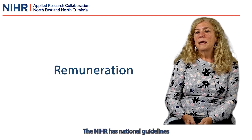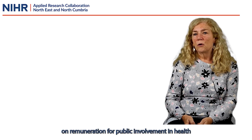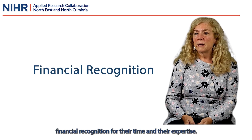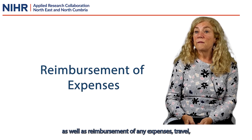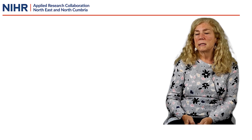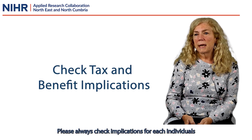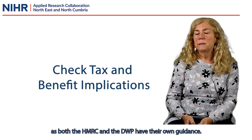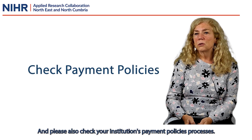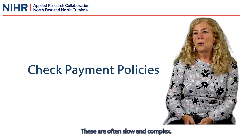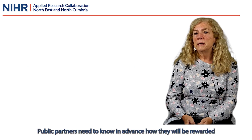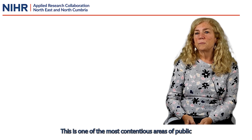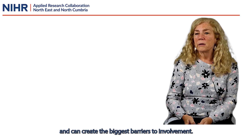Remuneration. The NIHR has national guidelines on remuneration for public involvement in health and social care research. There is an expectation, therefore, that people will receive financial recognition for their time and their expertise, as well as reimbursement for any expenses — travel, childcare costs, personal assistance, etc. Please always check any implications for each individual's tax or benefits payments, as both HMRC and DWP have their own guidance. Please also check your institution's payment processing processes, as these are often slow and complex. Public partners need to know in advance how they will be rewarded for their involvement. This is one of the most contentious areas of public and service user involvement in research and can create the biggest barriers to involvement.